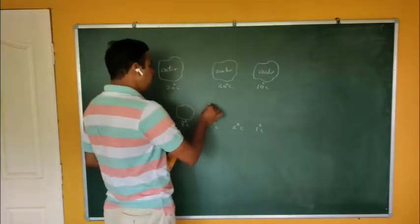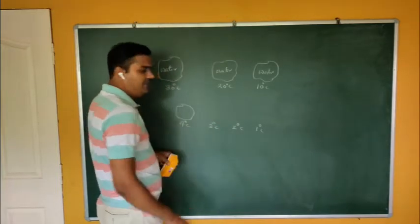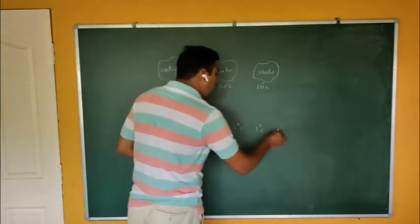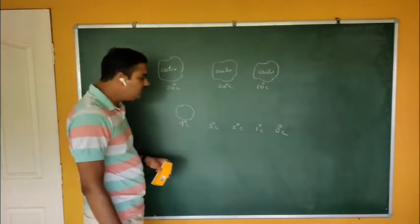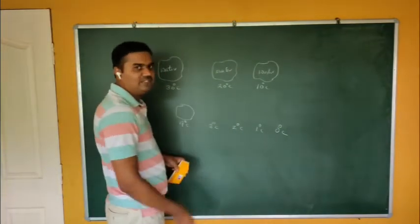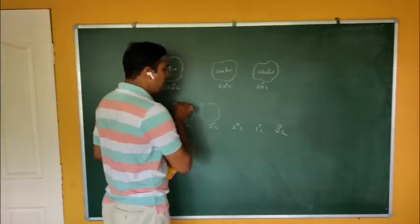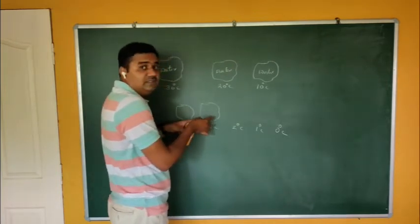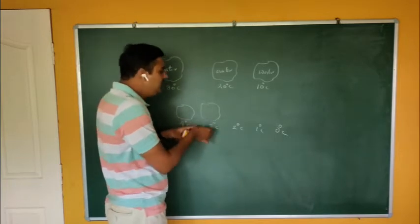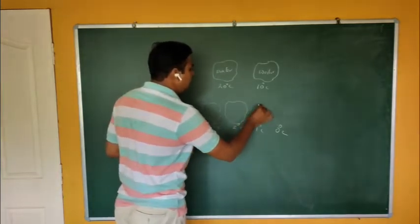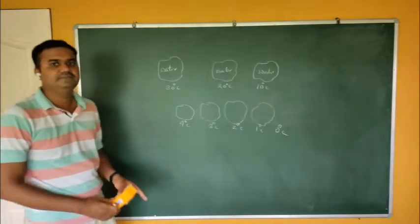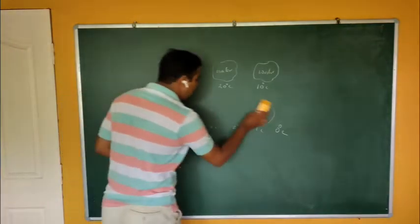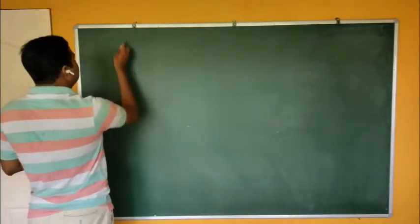As the temperature decreases, volume should decrease — that is the general property of material. But for water between 4°C and 0°C, instead of contraction, expansion takes place. When going from 4°C to 3°C, volume is not decreasing but increasing. At 2°C and 1°C, it again starts increasing. This is an unusual behavior of water.